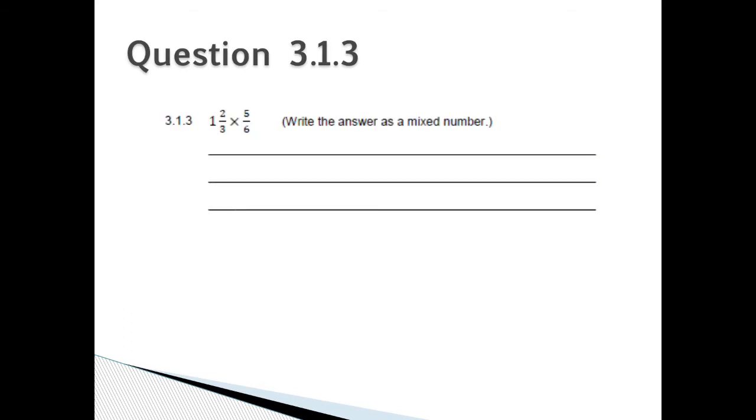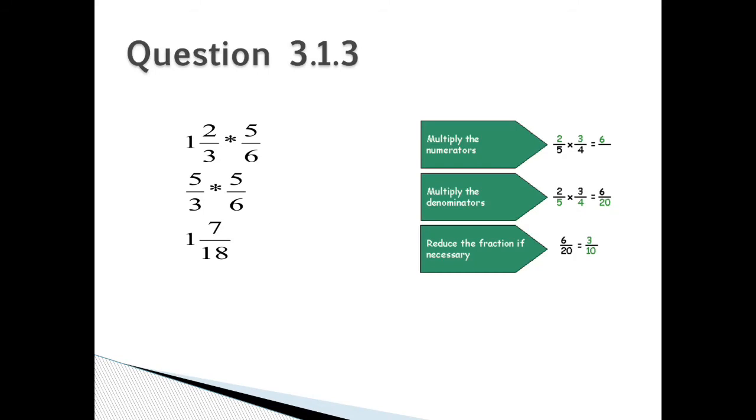Question 3.1.3: 1 and 2 over 3 times 5 over 6. Write the answer as a mixed number. Answer for 3.1.3: 1 and 2 over 3 times 5 over 6. Remember you must multiply the numerators: 5 over 3 times 5 over 6. You must multiply the denominators to give you 25 over 18. Therefore your answer is 1 and 7 over 18. So you reduce the fraction if it is necessary.